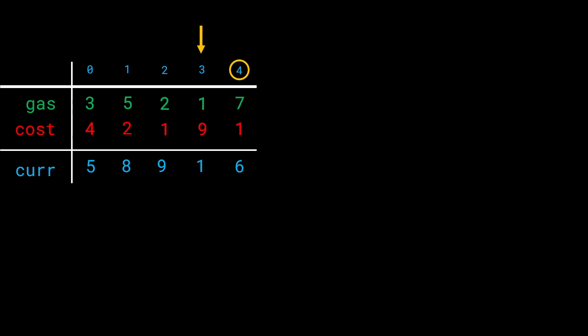Now we can go back to station 4, the station we started from. We went ahead and did a complete circular loop and reached back at station 4. Station 4 is the lowest possible station we could have started from that results in a valid circular route, so 4 is the final answer for this test case.